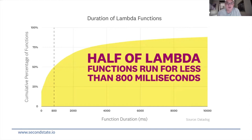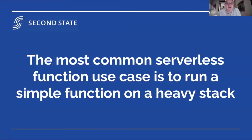That's actually one of the other things that surprised me — the way people use serverless functions tends to show this clearly. The most common serverless function use case is to run a simple function on a heavy stack. Node.js and Python are slow and take a long time, and that in turn only allows people to run simple functions. You can only run a fairly simple function and it's going to take 800 milliseconds. So there's only a limited number of use cases where we can actually use serverless functions.